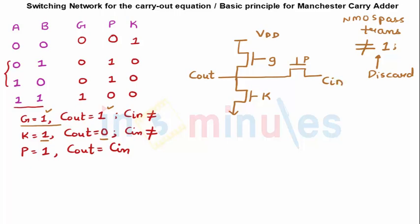Let us quickly understand all these cases. When G is one, at that point of time we have already seen that propagate and kill has to be zero. So this is zero, this is zero, this is off, this is off, and this will pull my output towards Vdd. So C out is equal to Vdd or one, which is exactly what we wanted.